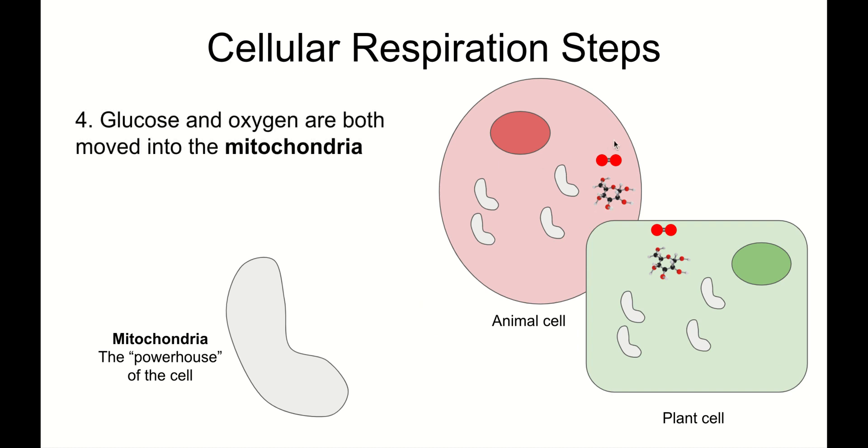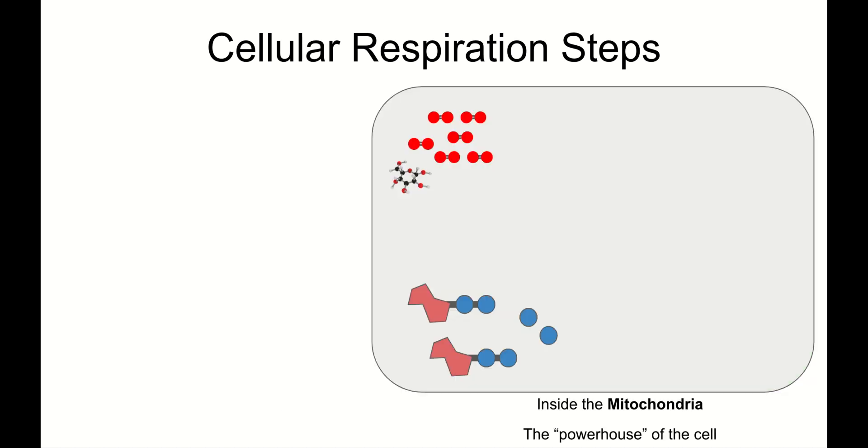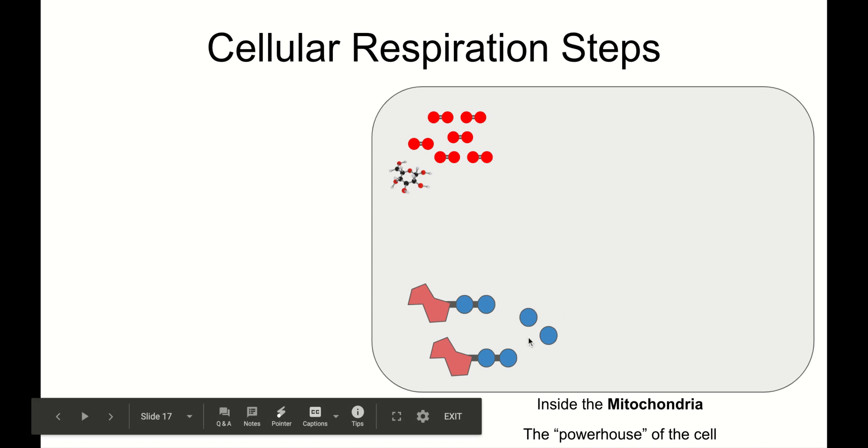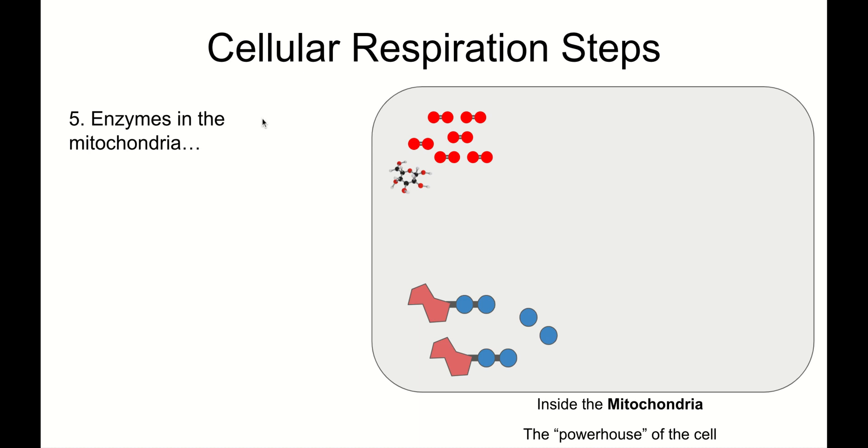Step four: Glucose and oxygen are both moved into the mitochondria. I've got a little mitochondria here. They're bean-shaped. They're very cute. You probably are familiar with mitochondria as being called the powerhouse of the cell. The mitochondria is an organelle in plant and animal cells where cellular respiration takes place. So let's zoom in to the mitochondria. Here we are. We're inside the mitochondria. We are inside the powerhouse of the cell. We've got our glucose and our six oxygen. Remember, that's what we started with, and our ADP. I've also got some phosphate groups here.